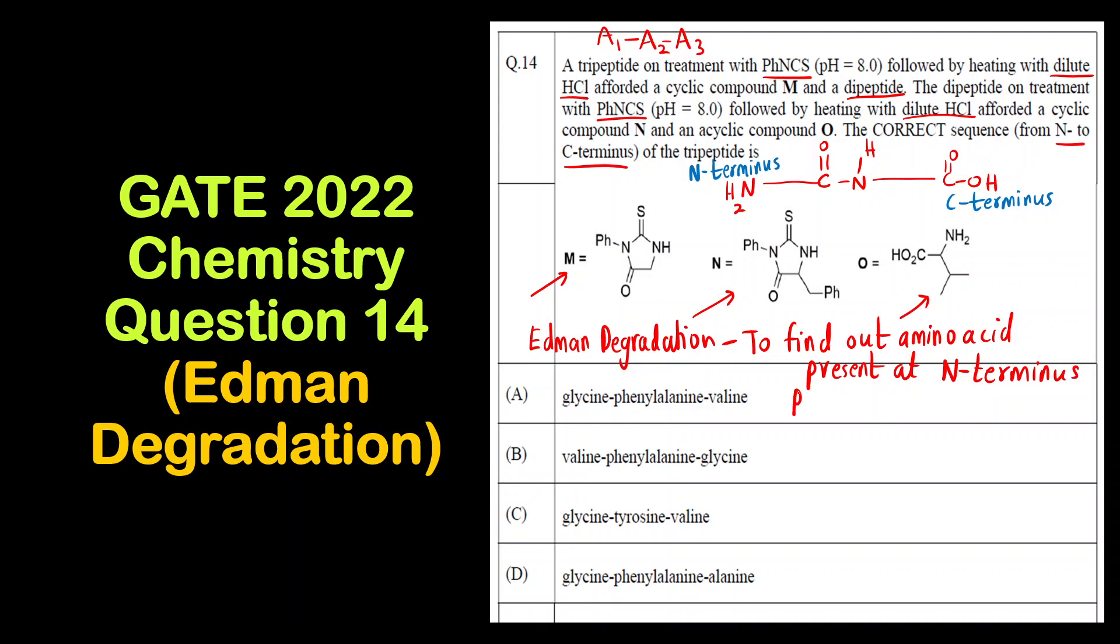So what happens is this PHNCS, that is phenyl isothiocyanate, it reacts with the first amino acid, that is A1. It will react with A1 and then we get this cyclic fragment M. Then we get the cyclic fragment M and the dipeptide, what will be the dipeptide? A2 A3.